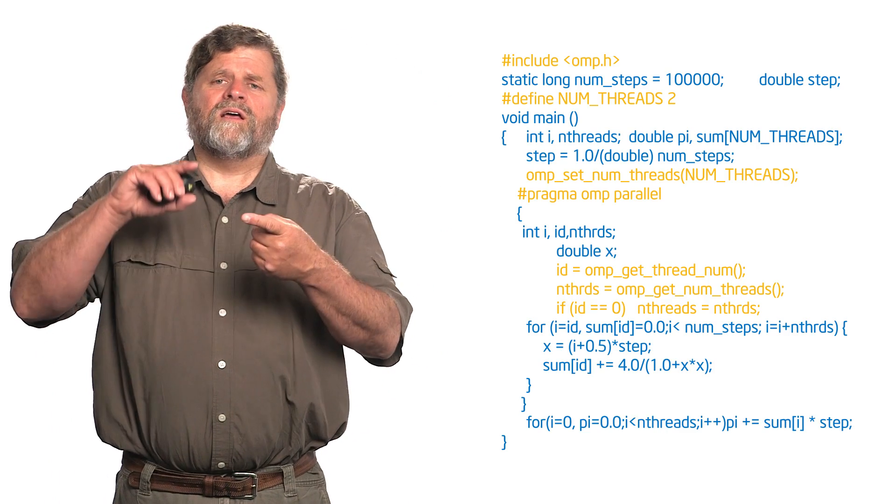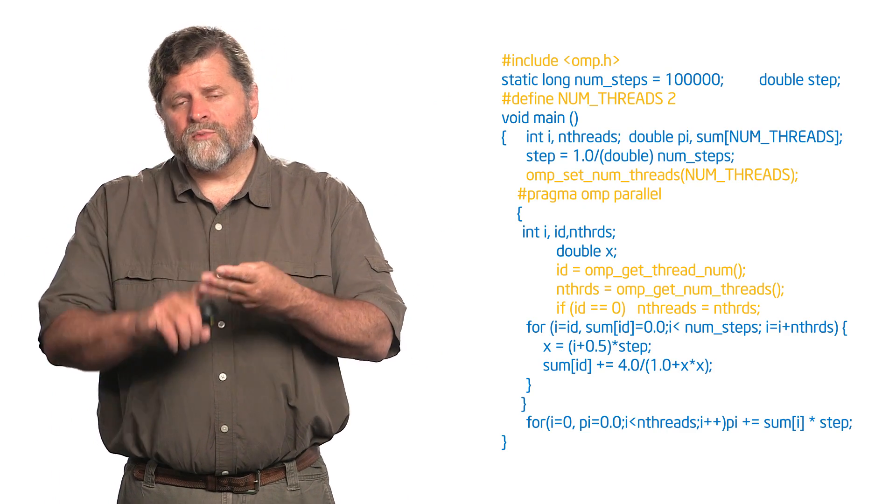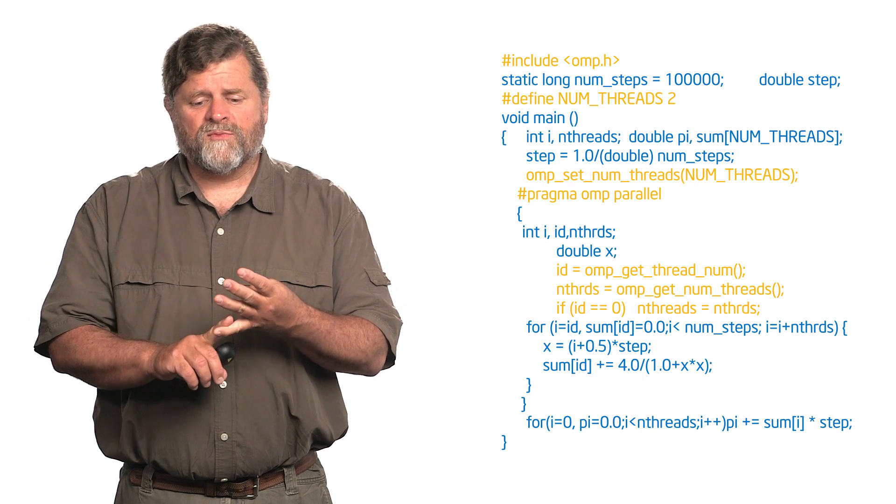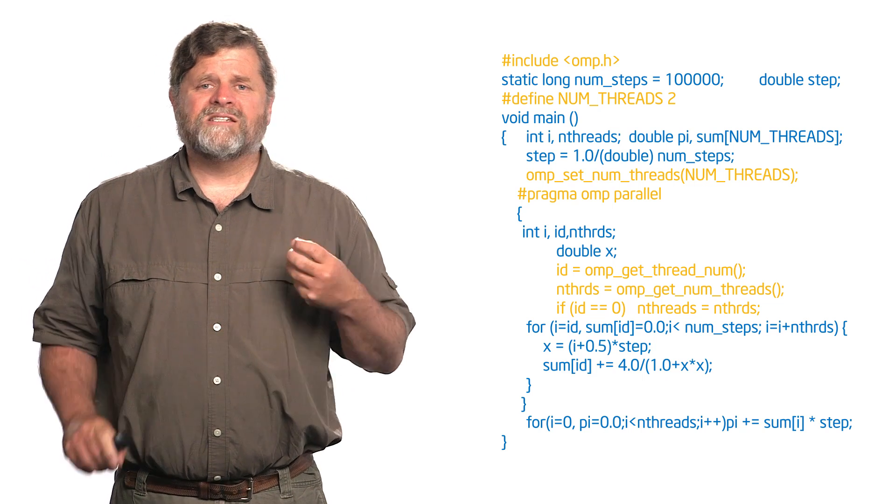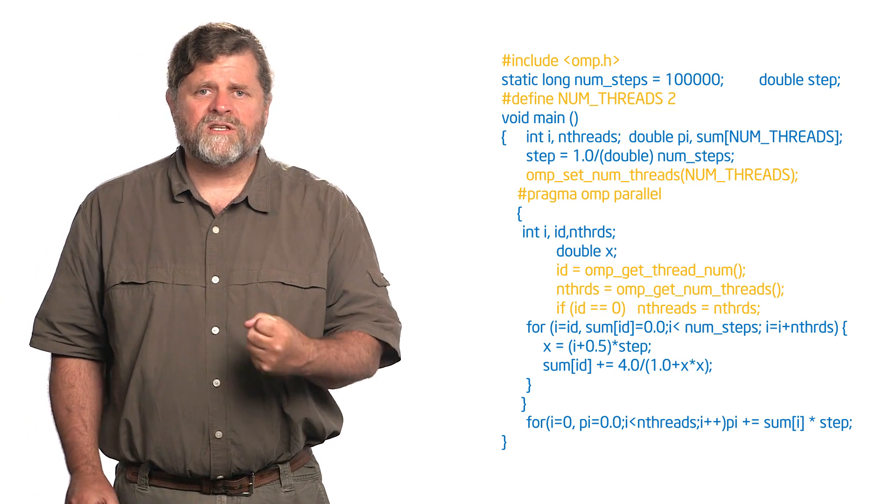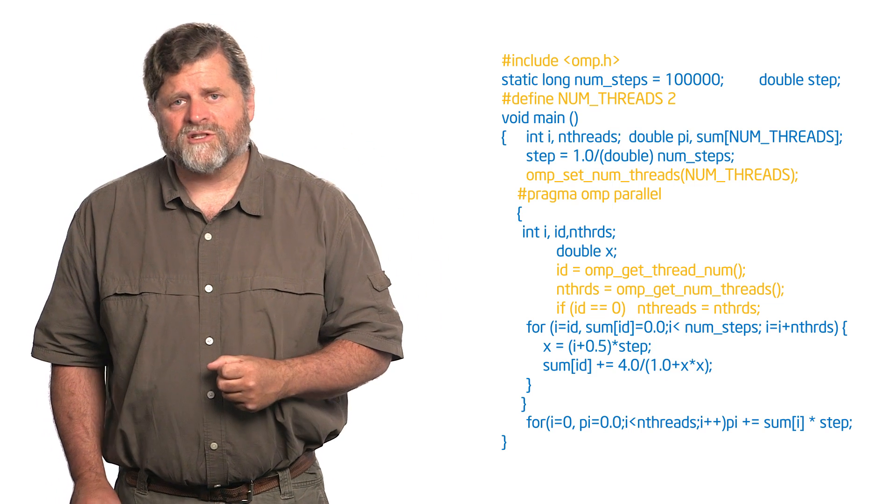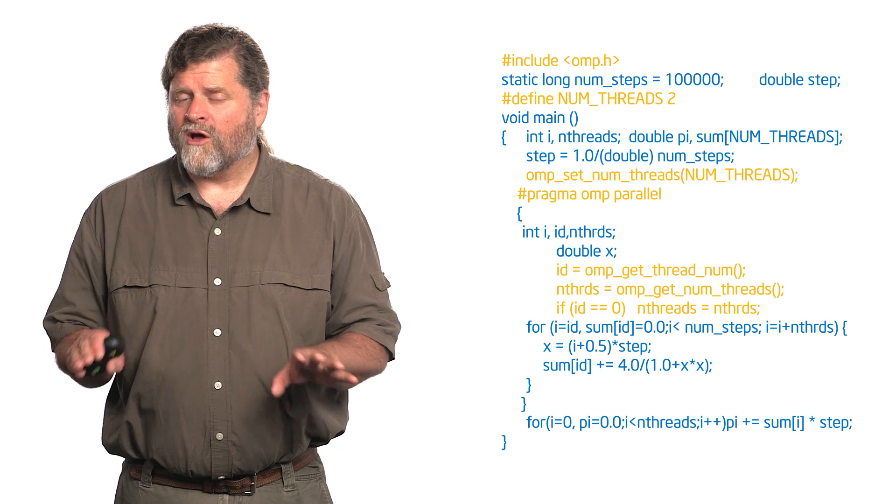Now, another thing I want to talk about is the threads had to have some local data they were working on. They had to be able to know that they could make changes to things like the ID, like its value of the step size at the middle, like the loop control variable. They needed to have their own copies of those. So notice the number of threads, the ID, the loop control index, the double for where the center of the loop was, I declared those inside the parallel region so they would sit on the stack for each thread. Very critical.